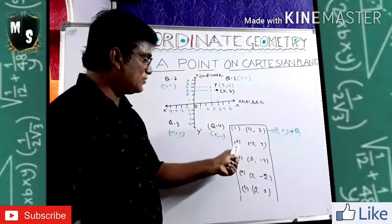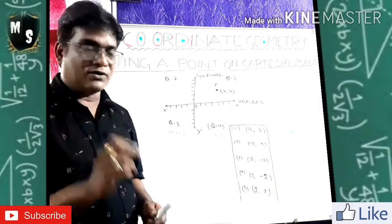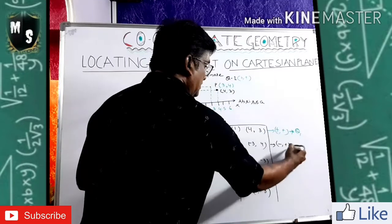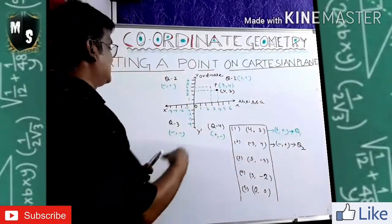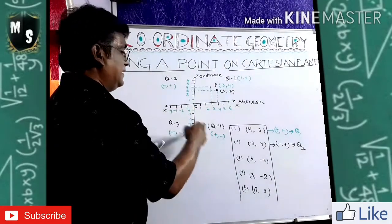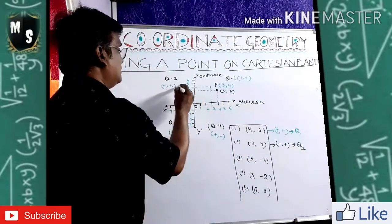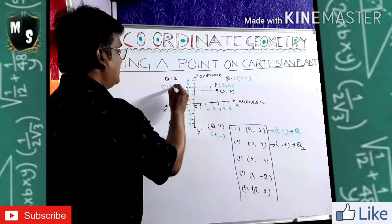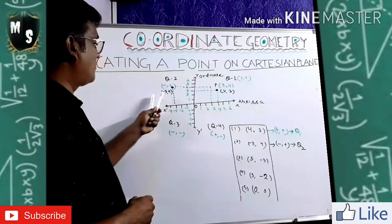Next, (-3, 4): it belongs to the minus-plus quadrant, which is quadrant two. X is minus three, so we go to minus three. In Y it is four, so we go to four. Now the point is here. The ordered pair is (-3, 4). Write the ordered pair like this.